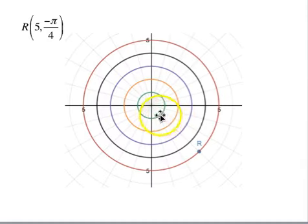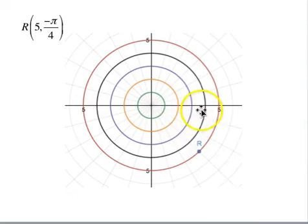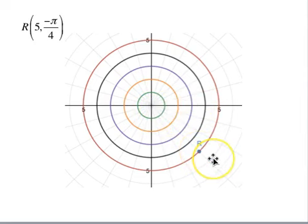Here you can see the 5 circles in various colors. Negative π/4 is 45 degrees from the x-axis, 5 circles out from the center — that's where that point would be: r=5 and θ=-π/4.